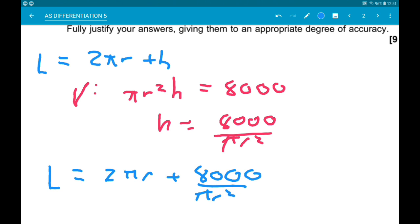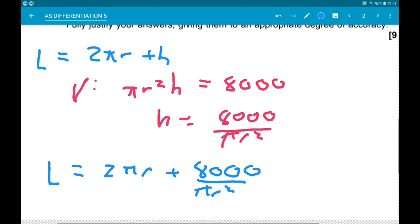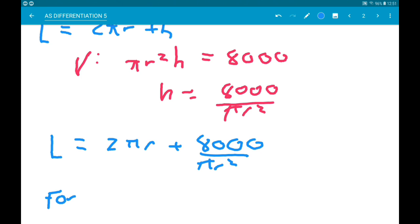Okay. Now let's think about what we're trying to find. We're trying to find a minimum length. So for minimum, which is a stationary point, dL by dr must equal zero. And the second derivative must be positive.